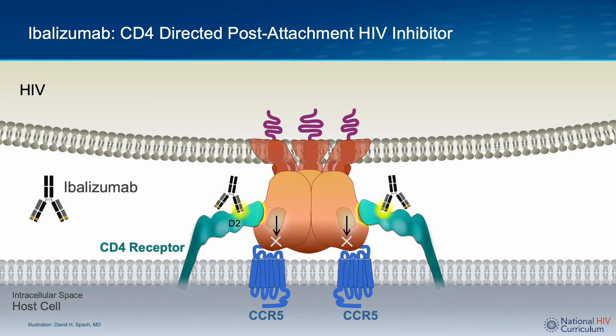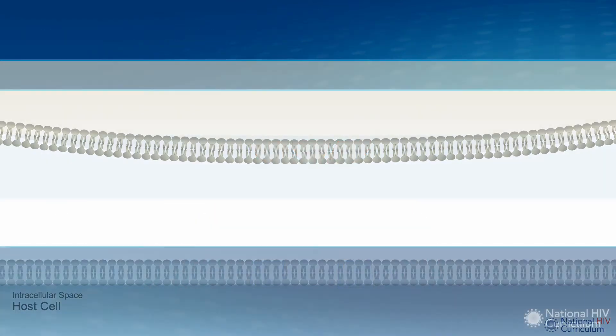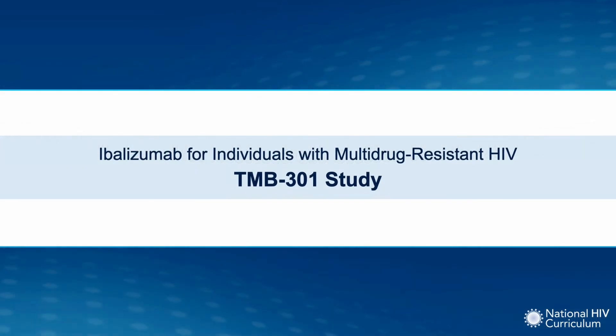Ibalizumab is therefore classified as an entry inhibitor, but its mechanism of action is different from the other currently available entry inhibitors such as Maraviroc, Fostemsevir, and Enfuvirtide. Next, let's review the phase three clinical trial that led to approval of ibalizumab for individuals with HIV-1 and multi-class antiretroviral drug resistance.